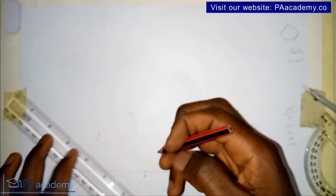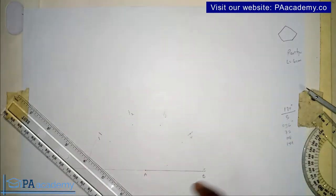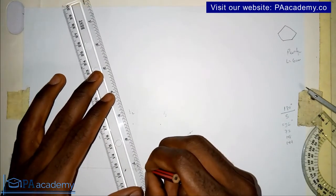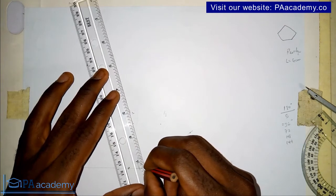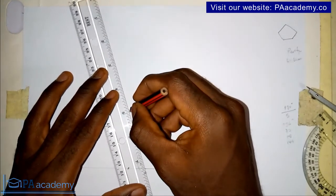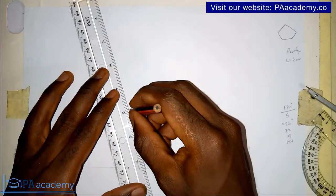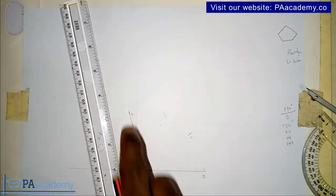From point A now, I'll join point A to two. Irrespective of the side, once you are at this point you just join it from point A to two.